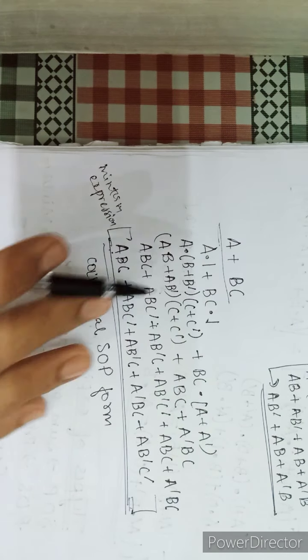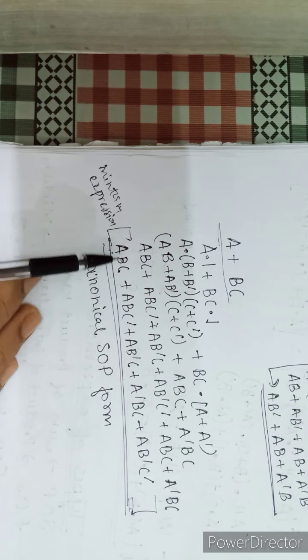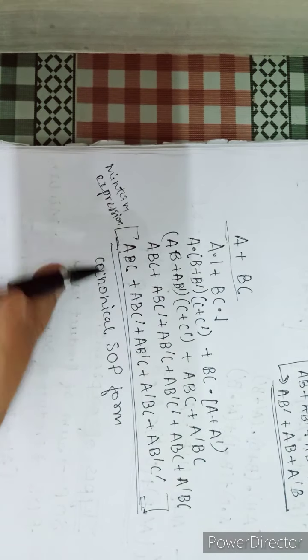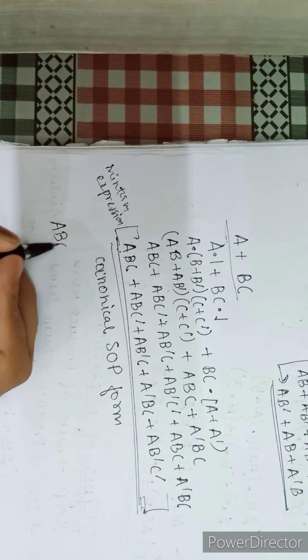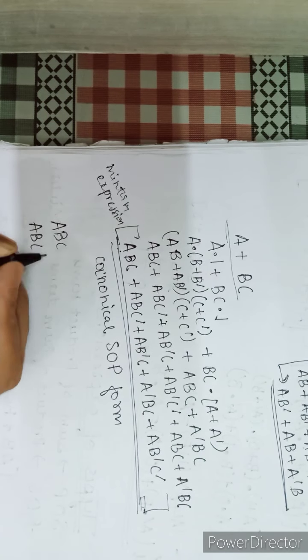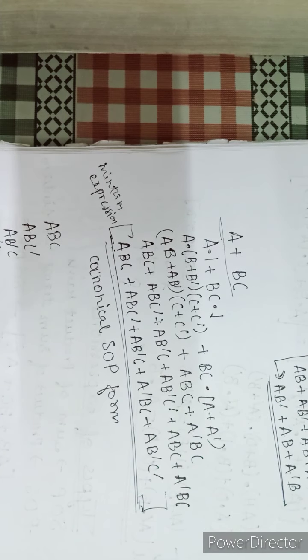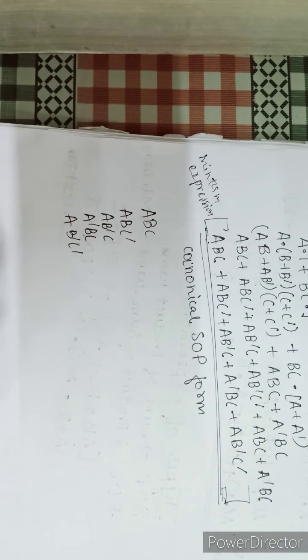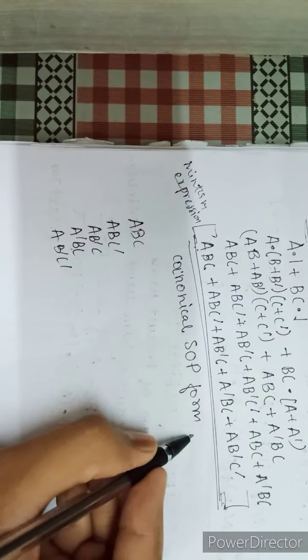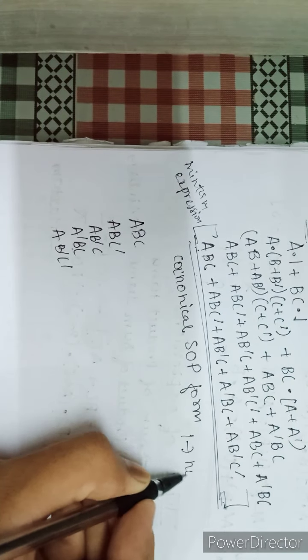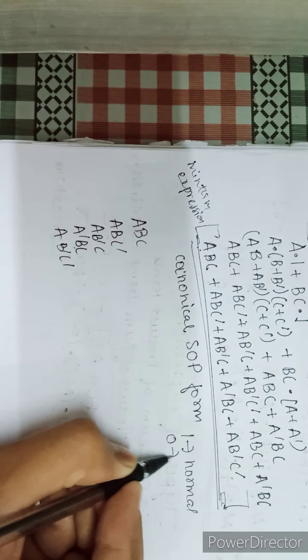Now coming to min term designation. Min term designation is the representation of min terms in their binary values. As we know, in a min term 1 is normal form and 0 is complement form. Taking the example: ABC, ABC-bar, AB-bar C, A-bar BC, AB-bar C-bar.